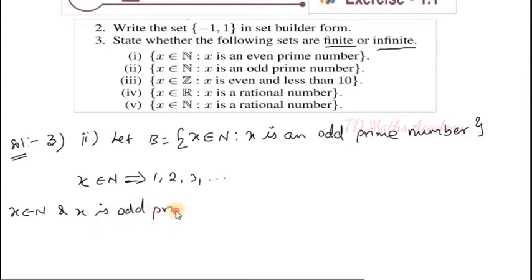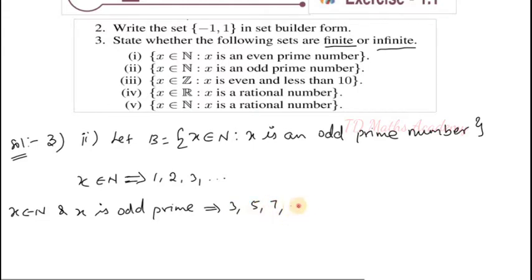Therefore you have to take only odd prime numbers. In natural numbers, most prime numbers are odd numbers. 1 is neither prime nor composite. 2 is a prime number but it is not odd. So you have to start from 3: 3, 5, 7, dot dot dot. Listen carefully — you have to know one concept: 2 is a prime number, but if you look at all other prime numbers, they are odd numbers.